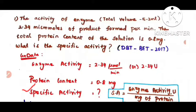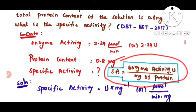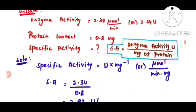They are asking what is the specific activity. The formula for specific activity is: enzyme activity in units (micromoles per minute) divided by mg of protein — the concentration of protein should be in mg. Here the data are given directly, so you just substitute in the formula. Specific activity equals enzyme activity 2.34 divided by mg of protein 0.8.